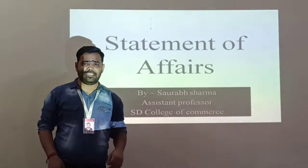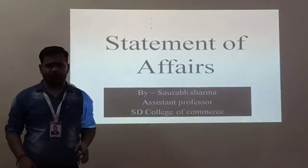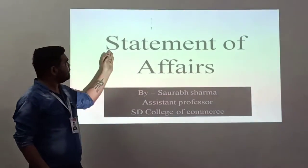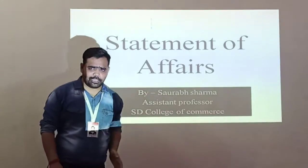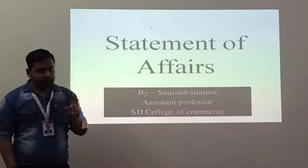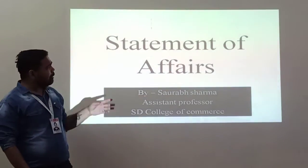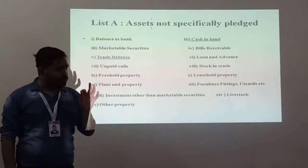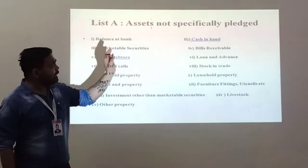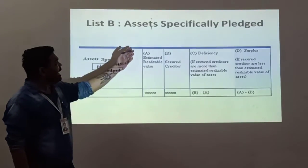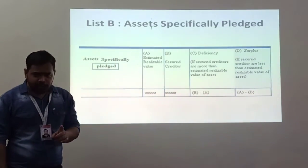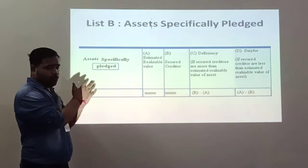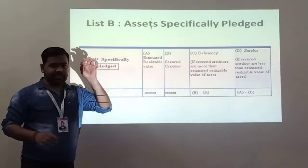Hi everyone, this is the second video, the second part in continuation of Statement of Affairs lists. In the previous video I told you about two lists: List A - assets not specifically pledged, and List B - assets specifically pledged. In this video I will continue with List C.